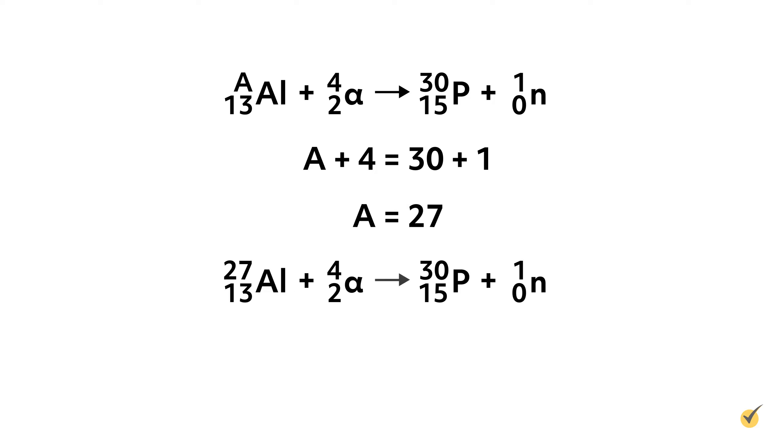Number two: again write out what you know. Aluminum was bombarded with alpha particles to form phosphorus-30 and neutrons. Note that we don't know the mass number of aluminum but can quickly solve for it. A, the unknown mass number, plus 4 equals 30 plus 1, so A equals 27. And we can write the equation as aluminum-27 plus an alpha particle fused into phosphorus-30 and a neutron. And the shorthand notation is 27-Al(alpha, n)30-P.